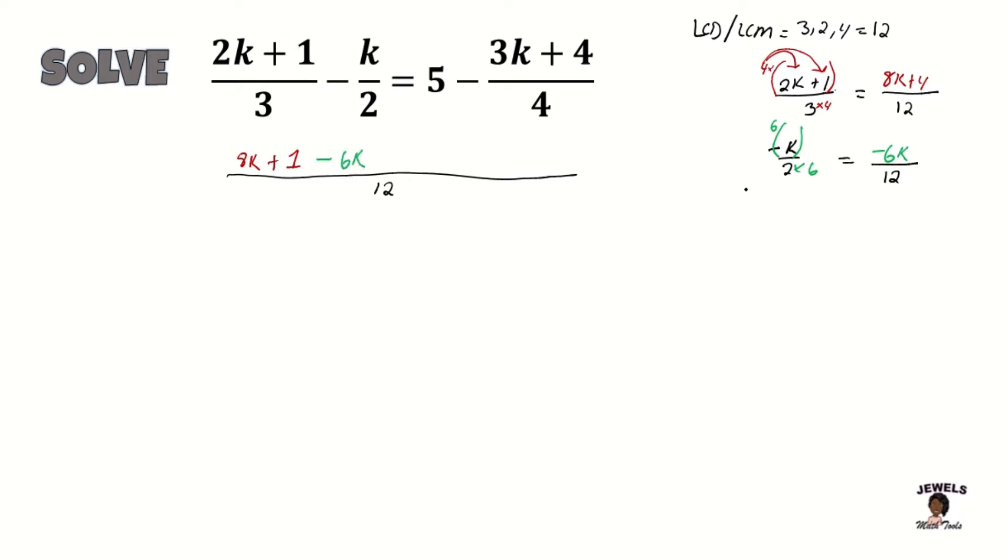Now let's look at our next term, which is our 5. And we know that with every whole number, it has a denominator of 1. So we're also converting this number to its equivalent form. We know that 1 times 12 will equal to 12, so 12 times 5 will equal to 60.